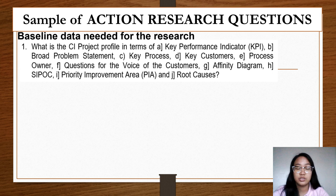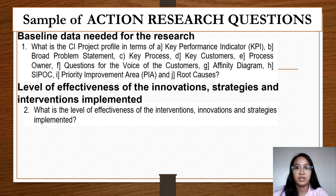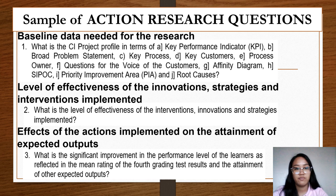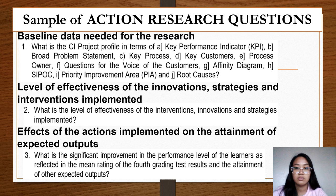On the level of effectiveness of the innovations, strategies, and interventions implemented, your question may be: 'What is the level of effectiveness of the interventions, innovations, and strategies implemented?' On the other hand, for the effects of the actions implemented on the attainment of expected output, your question may be: 'What is the significant improvement in the performance level of the learners as reflected in the mean rating of the fourth grading test results and the attainment of other expected output?' There you have the sample action research questions.